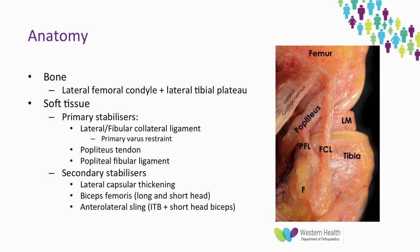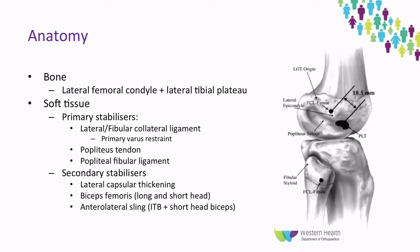Going into the anatomy in more detail, the lateral collateral does not originate from the lateral epicondyle. It originates from a depression which is proximal and posterior to the lateral epicondyle and runs to the mid portion of the fibular head. The popliteal tendon attaches into the popliteal sulcus, which is more anterior and distal to the LCL on the femur. The popliteal fibular ligament runs from the musculotendinous junction of the popliteus and attaches onto the fibular styloid.